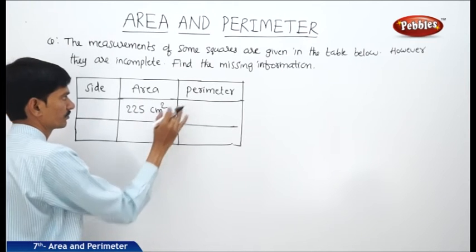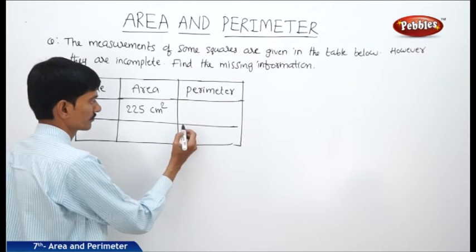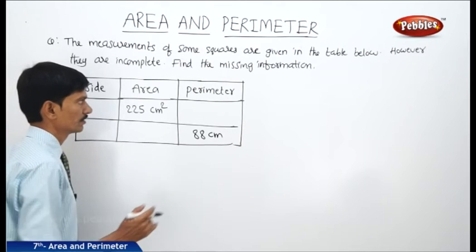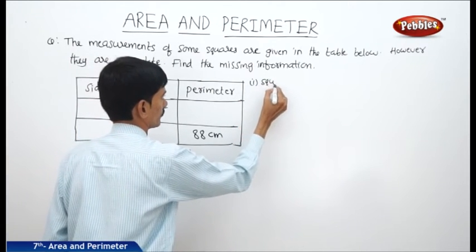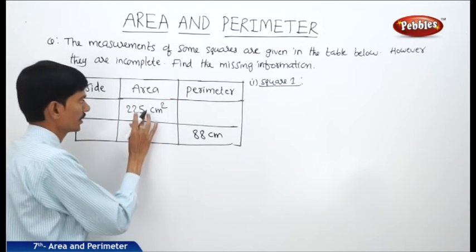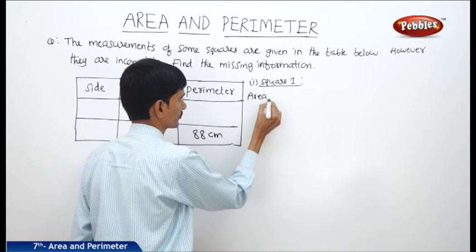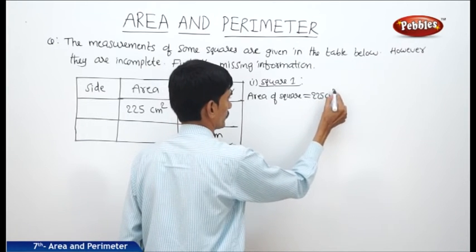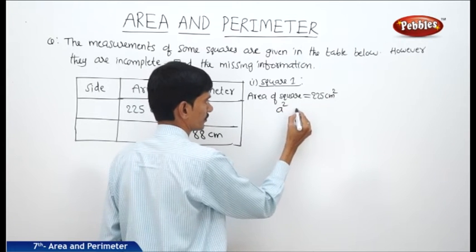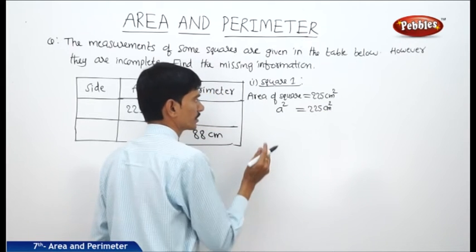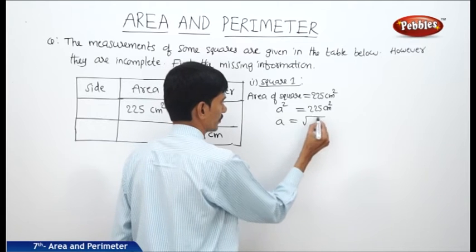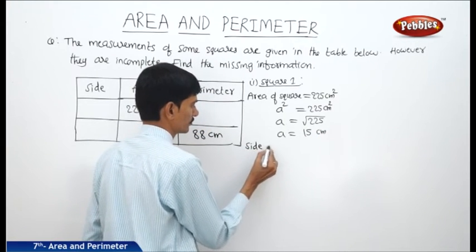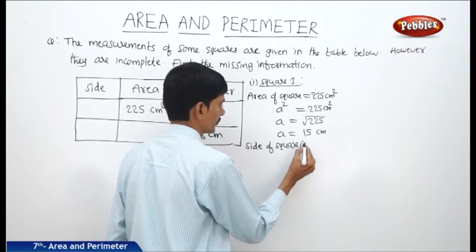For square 1, we have to find the side and perimeter. The area is given as 225 cm². Using the formula A² = 225, transposing gives A equals the square root of 225, so A equals 15 centimeters. That means the side of square 1 is 15 centimeters.